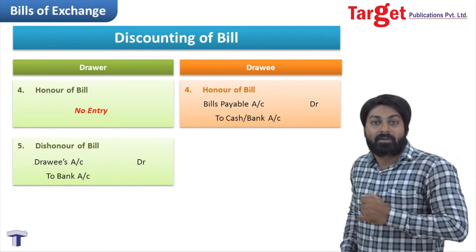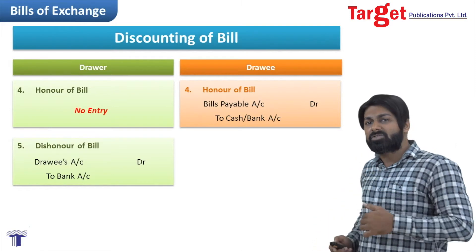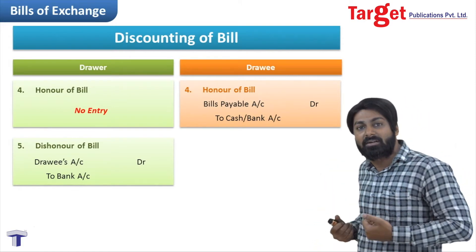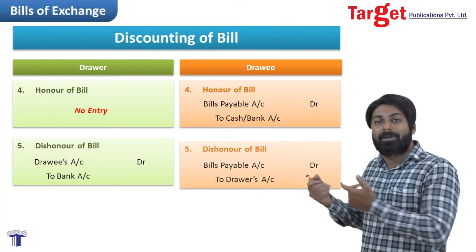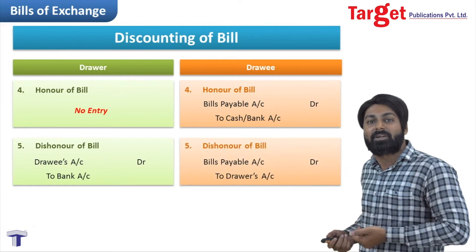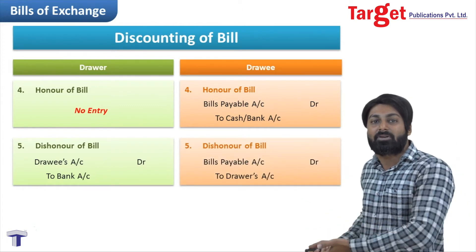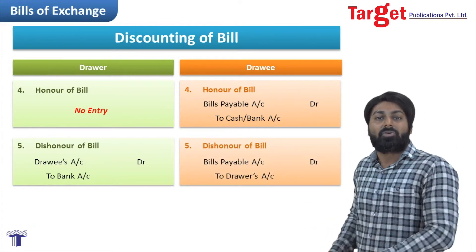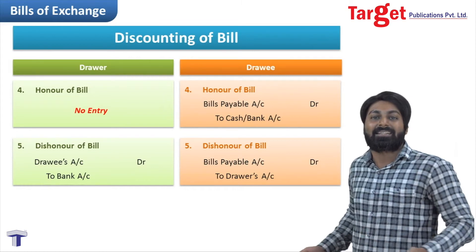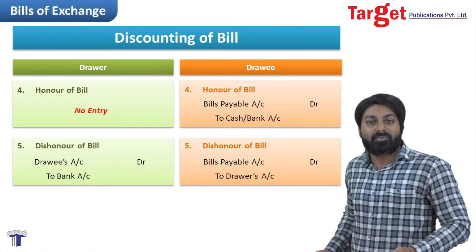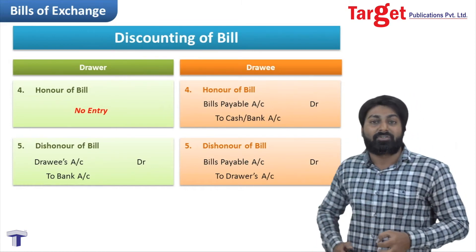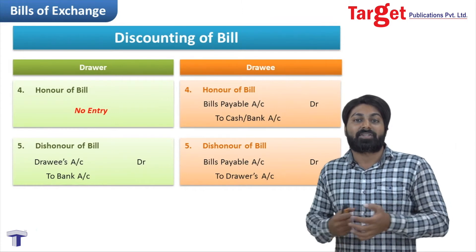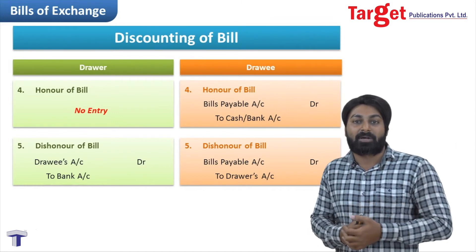In the books of the drawee for dishonor: the drawer came and gave the bill, so Bills Payable account is debited and Drawer's account is credited. The drawee is not concerned with the bank — the drawee has no dealing with the bank at all. So this was about the dishonor entry.